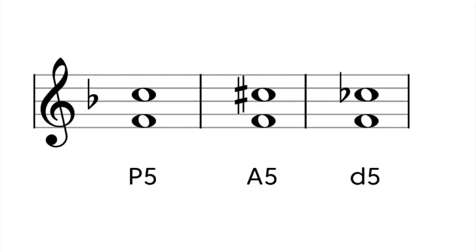To create an augmented fifth, you take a perfect fifth and make the interval one half step larger. Let's give it a listen.